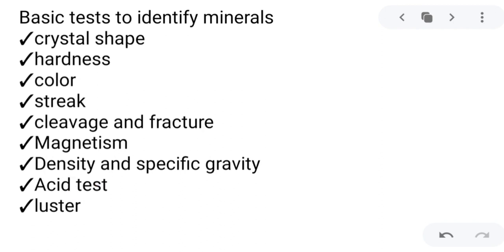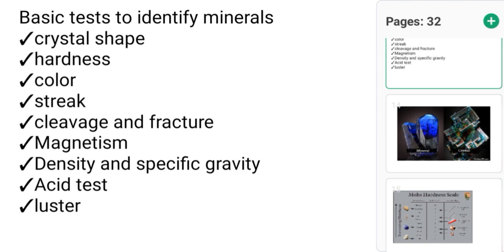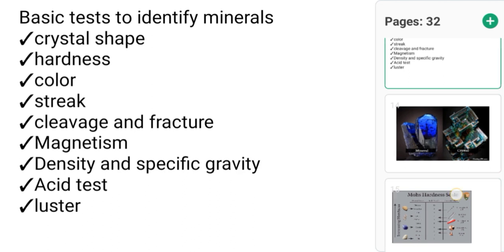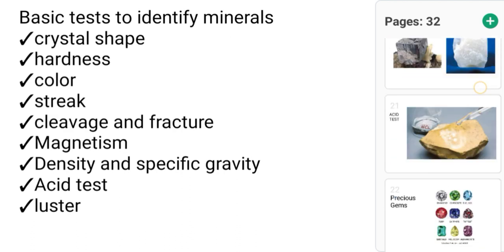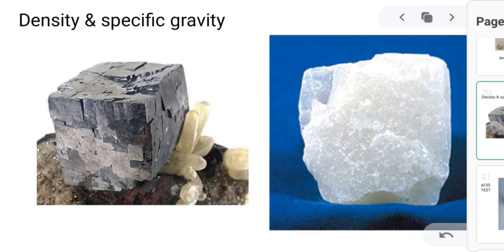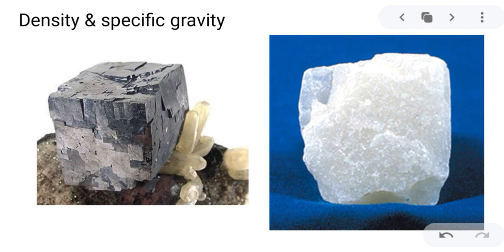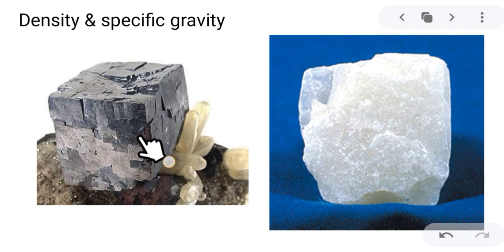Another property to identify a mineral is density and specific gravity. Each mineral has a unique density, which is the mineral's mass divided by its volume. The higher a mineral's density, the more tightly packed are its atoms. You can compare densities by comparing how heavy pieces of the same size feel. For example, galena feels much heavier than the same-sized piece of talc, so galena has a higher density and specific gravity than talc.